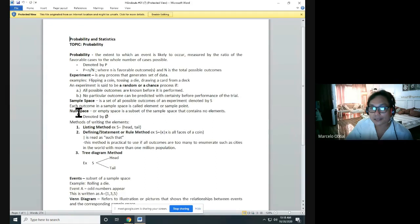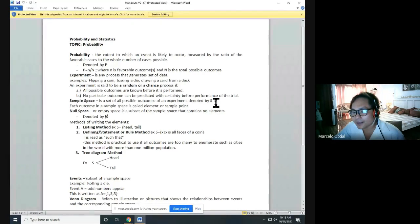Number three, sample space is a set of all possible outcomes of the experiment denoted by S. Again, let us reserve this variable S or letter S, capital S, to denote sample space.